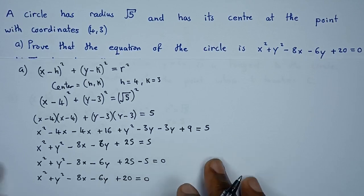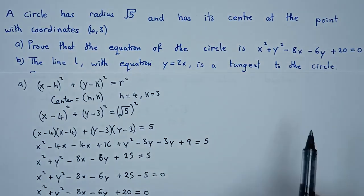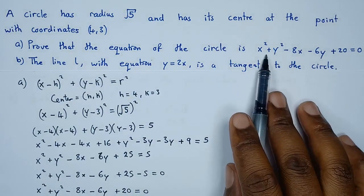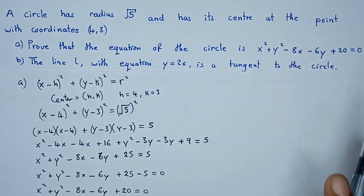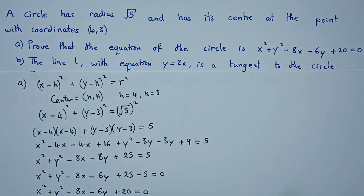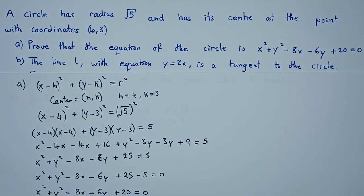This simplifies to x squared plus y squared minus 8x minus 6y plus 20 equals 0. This shows the equation that we're looking for.